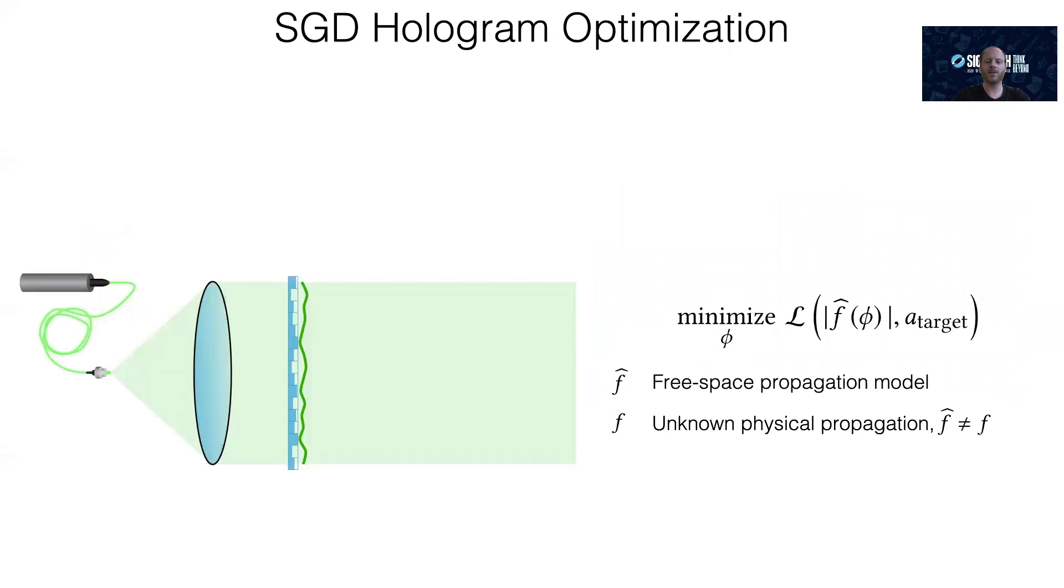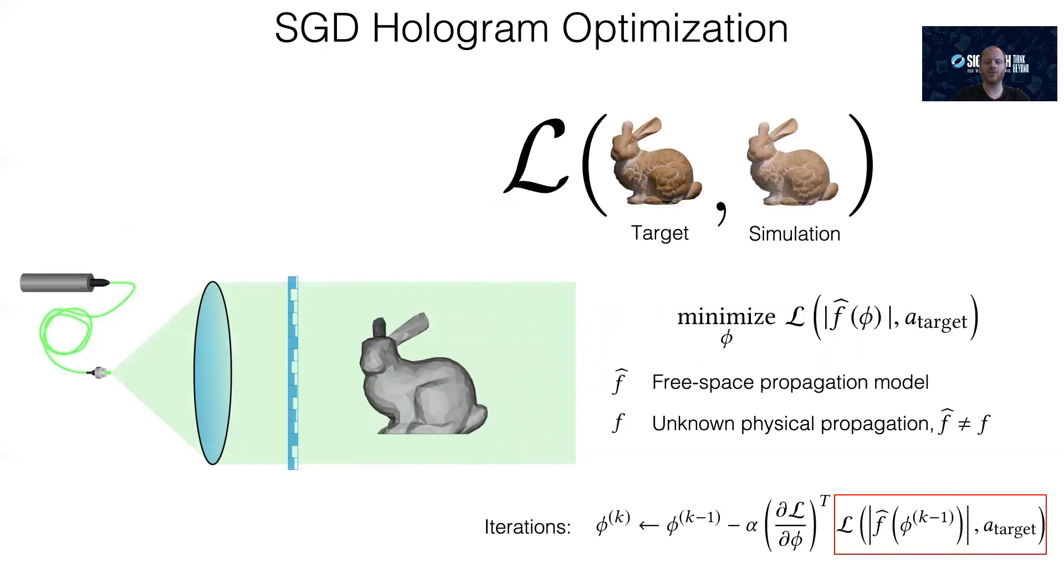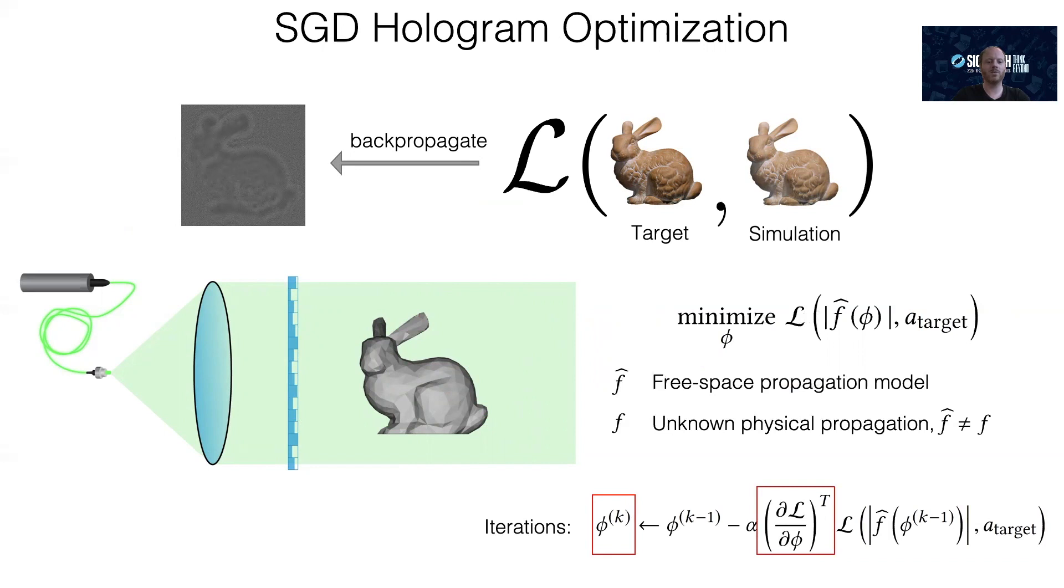The goal for any CGH method is to solve an objective function of the form shown here. Here, f̂ is our simulated model of free space propagation, and a is the target amplitude. Note that the physical light transport in the display, f, is often slightly different from f̂, because of optical aberrations, phase nonlinearities of the SLM, and other effects. But we'll get back to that later. For now, all we have is our simulated idealized light transport model, f̂. Now we can iterate using a simple gradient descent update rule, where we start with some initial guess of the SLM phase. We simulate the forward model, we compare the simulated result with our target using some loss function, such as mean squared error, and then we propagate the error back into the phase. This simple approach will eventually converge to a good solution if applied over and over again.